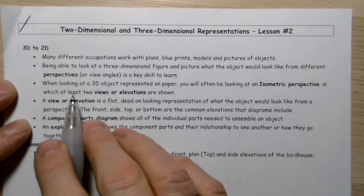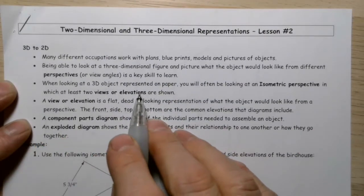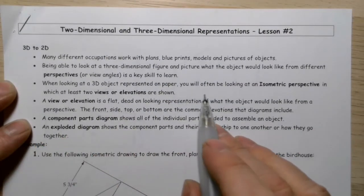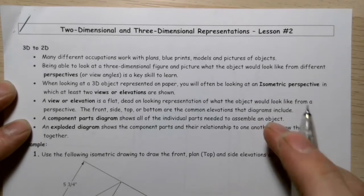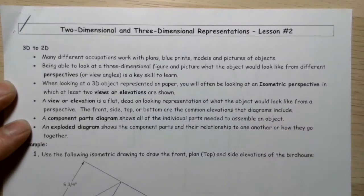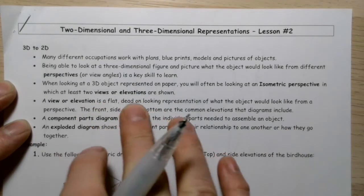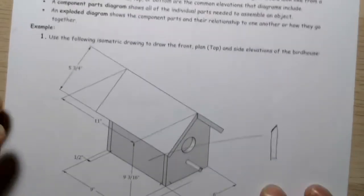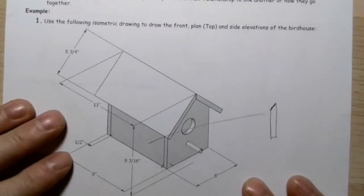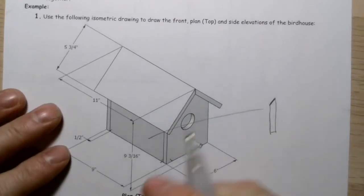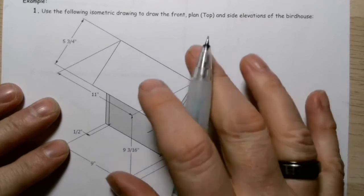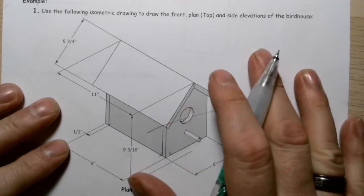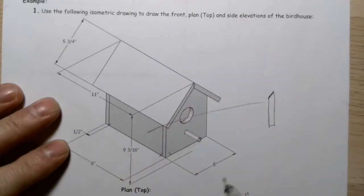When looking at a 3D object represented on paper, you're often going to be looking at an isometric perspective, which gives you at least a couple of different views, or what we call elevations. Here's an example of an isometric diagram of a birdhouse, just to give you an idea. You're kind of looking at it from above and to the left.